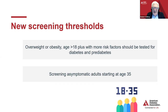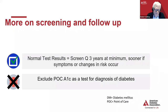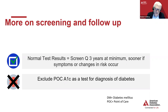The other big change is, if people don't fit that criteria in terms of age 18 and risk factors, really all individuals should be screened for diabetes starting at age 35. That is a lowering of the threshold based on the evidence. If one screens normal at age 35, or somewhere between 18 and 35 based on having multiple risk factors, then repeat screening should be every three years, unless the individual has symptoms or there's a change in risk factors. We now also exclude point-of-care A1C testing for the diagnosis of diabetes.